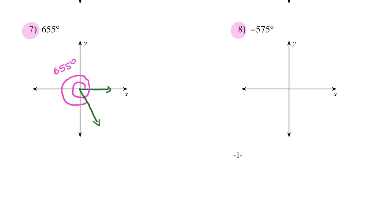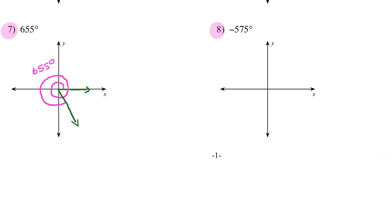For negative 575 degrees: initial side, opening downward because it's negative. Going around clockwise — that's my 360. Now I'm missing 250 more: 90 more, then 180 more — from there I'm missing around 35 degrees more. Somewhere around here is my terminal side, and that's my angle of negative 575 degrees.